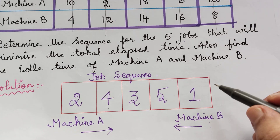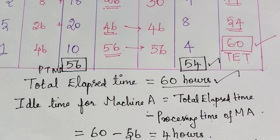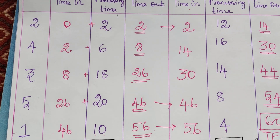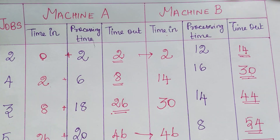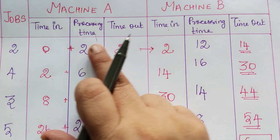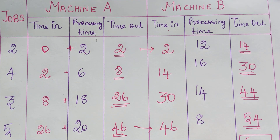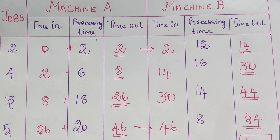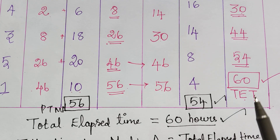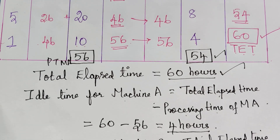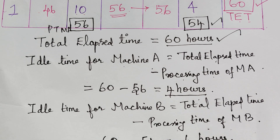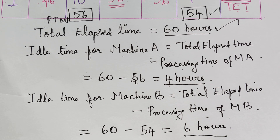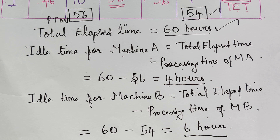With this we are done with the problem. To summarize: the first step is to find the job sequence, then form the table where we write the sequence of jobs in order, then write the time in, processing time, and time out for machine A and similarly for machine B, then calculate time in and time out to get the total elapsed time. By subtracting total processing times from total elapsed time we get the idle time. I hope you understood this problem. Kindly follow the next video lecture for a slightly different problem on this topic where the processing times will be repeated more than once. Thank you.